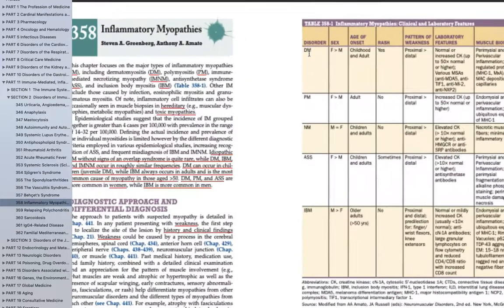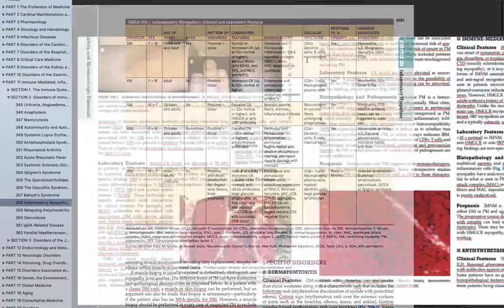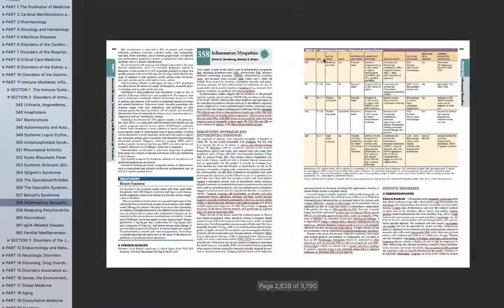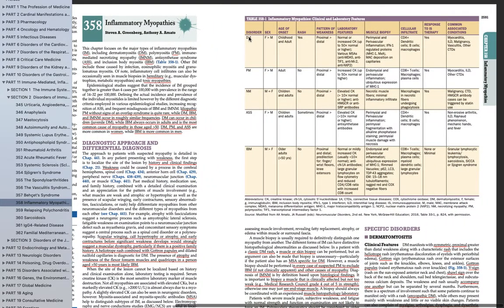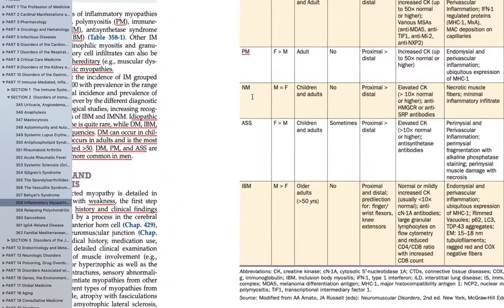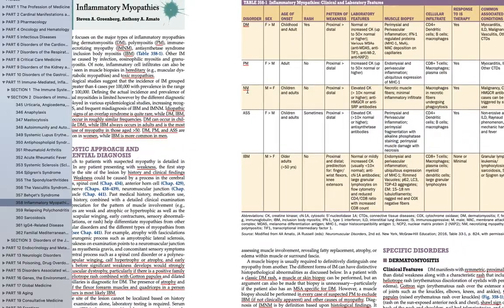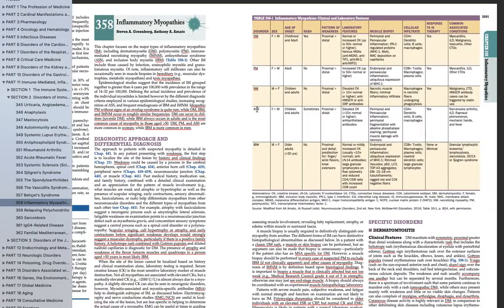The first classification is dermatomyositis — as the name indicates, you have involvement of the skin. In polymyositis, you don't have involvement of the skin. Then you have necrotizing myopathy, abbreviated NM, followed by aminoacyl tRNA synthetase syndrome, and the last one being inclusion body myositis. These are the five clinical classifications of inflammatory myopathy.